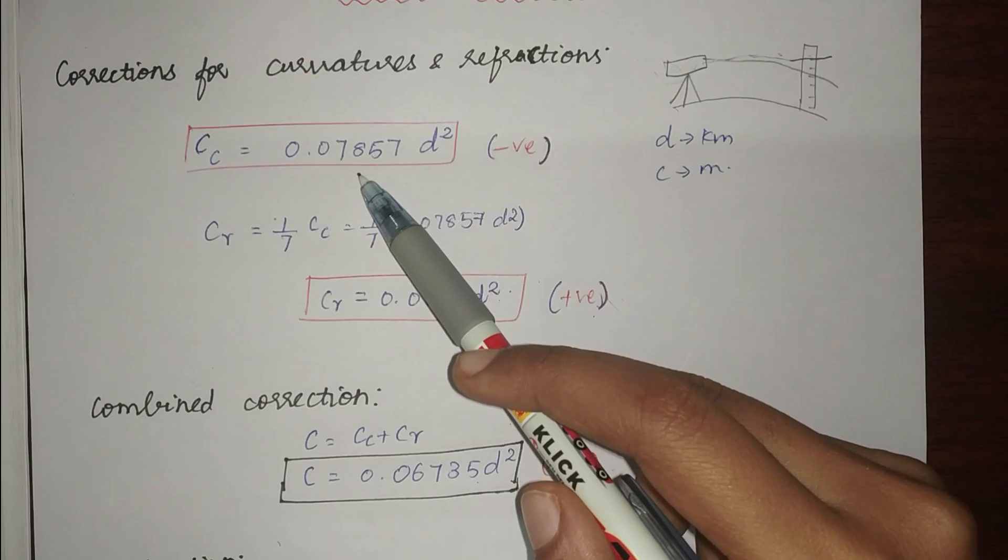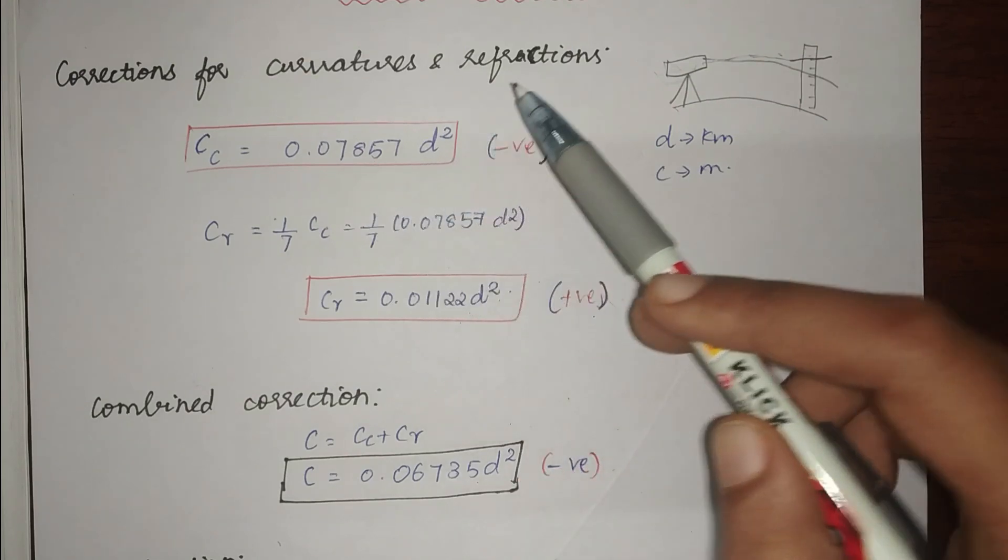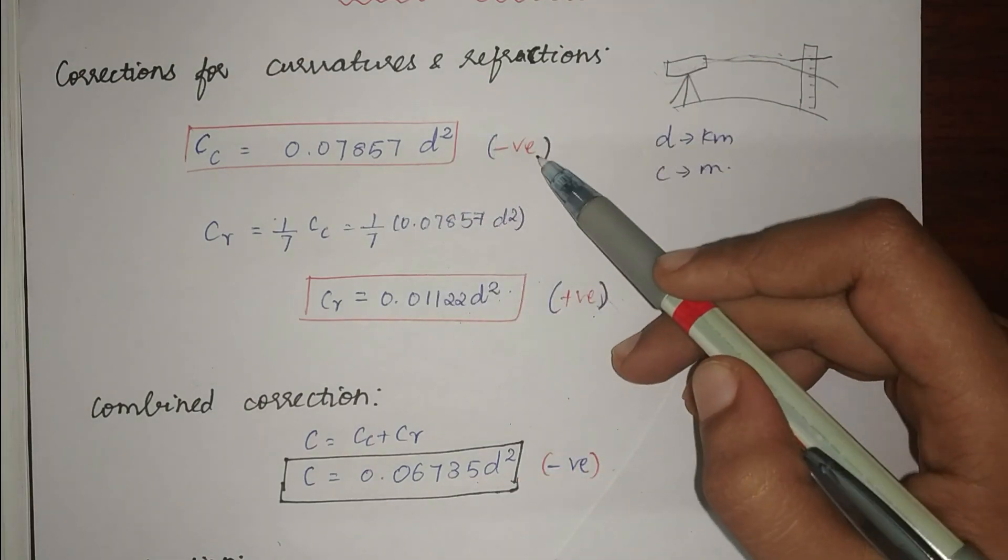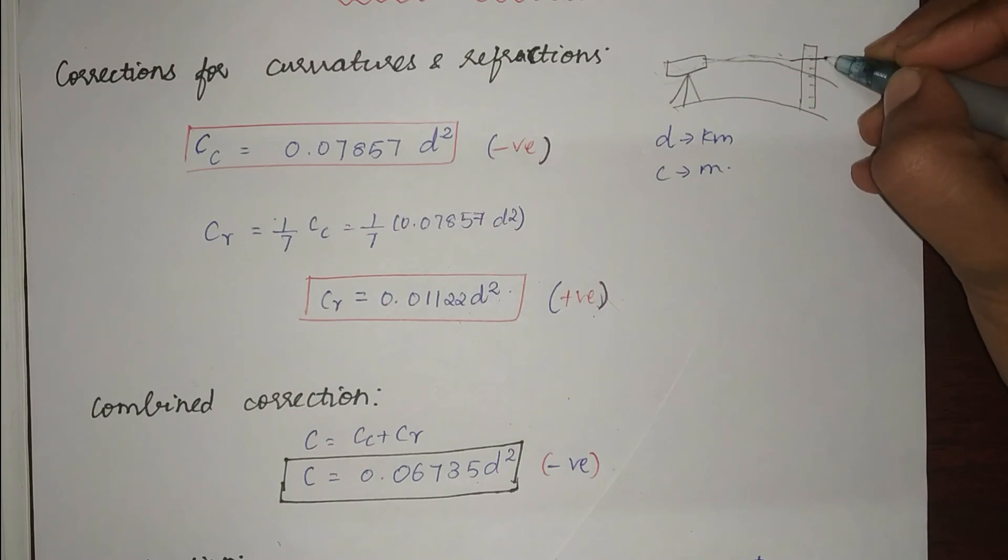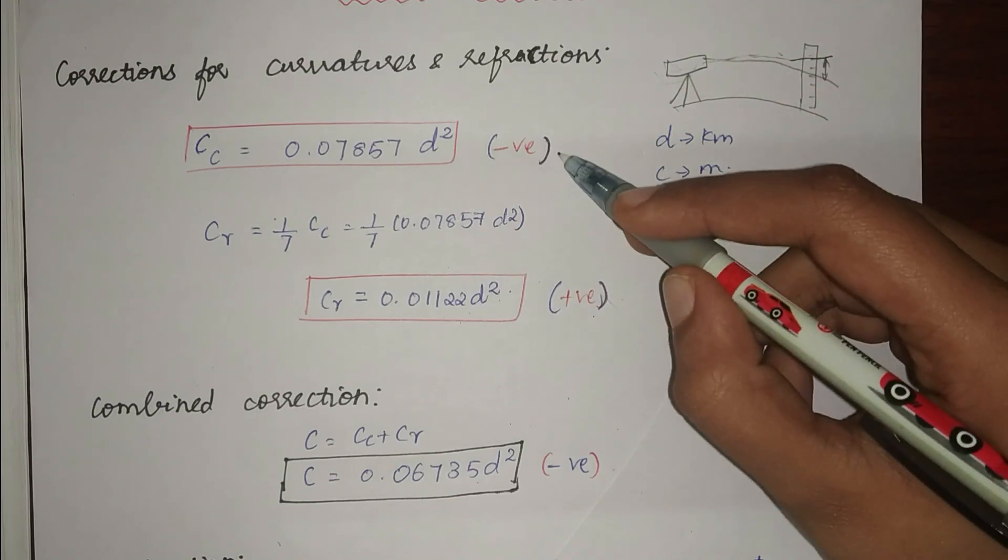This 0.07857 d square. This is a negative correction because our answer which we have got here is greater than the original answer. So this is a negative correction.